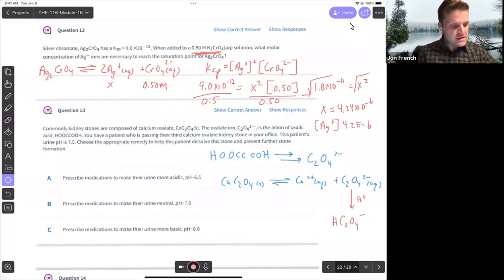Common ion effect. We're going to have something like this on the exam tomorrow. Silver chromate is going to ionize to give me silver and chromate. KSP is going to be the concentration of silver squared times the concentration of chromate. The only difference here is we have a common ion. I've added potassium chromate to solution.